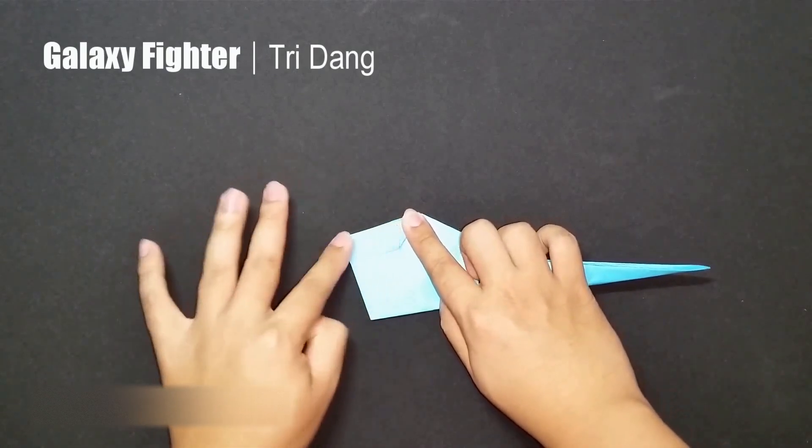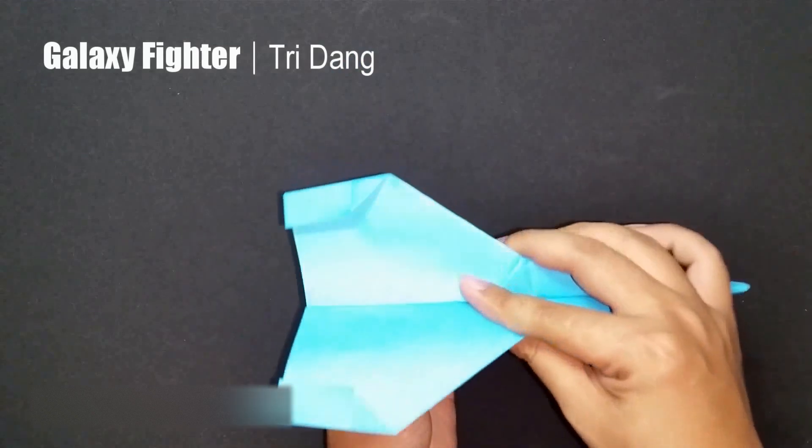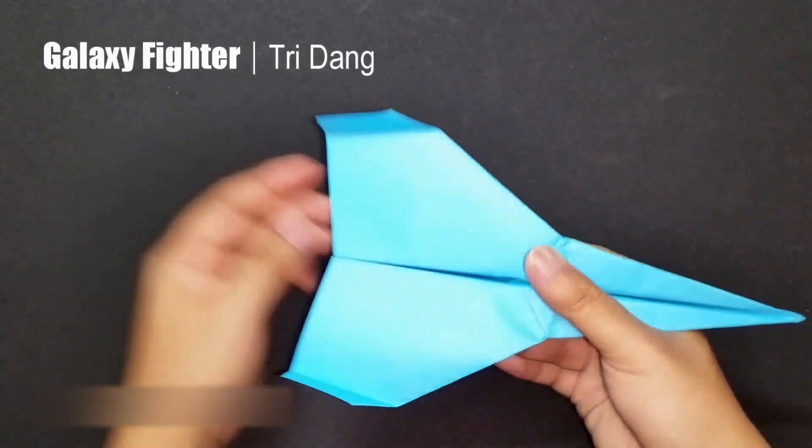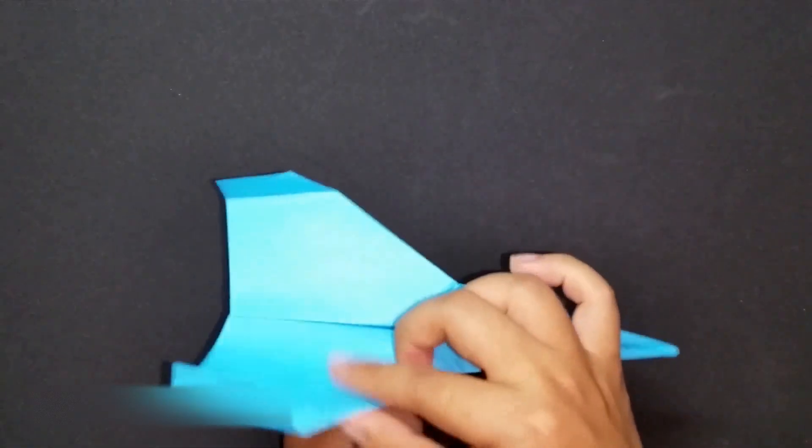Now, unfold the paper. Unfold the stabilizer. Curl the wings up a bit to make it flat. There you go.